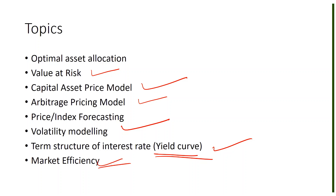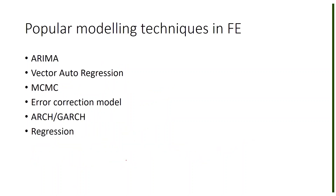Then there's market efficiency — you may have heard of the efficient market hypothesis. Researchers do lots of analysis on understanding both efficiency and deficiency in the market, and financial econometrics is used there too. Apart from that, there are many other topics like anomaly detection in price or market data, analysis of economic downturns, and forecasting the possibility of economic downturns — these also come under financial econometrics.